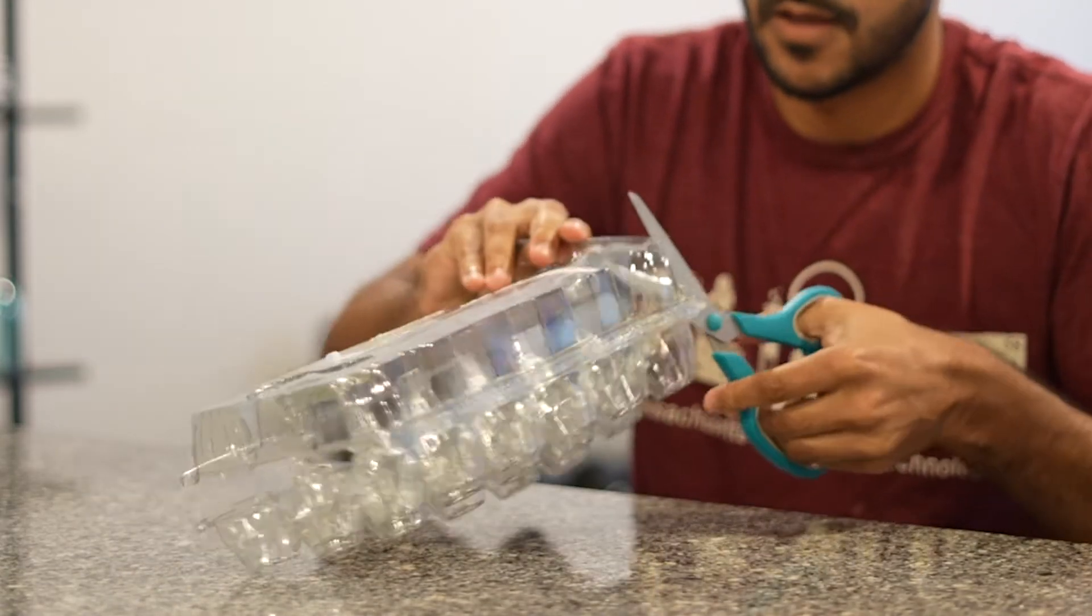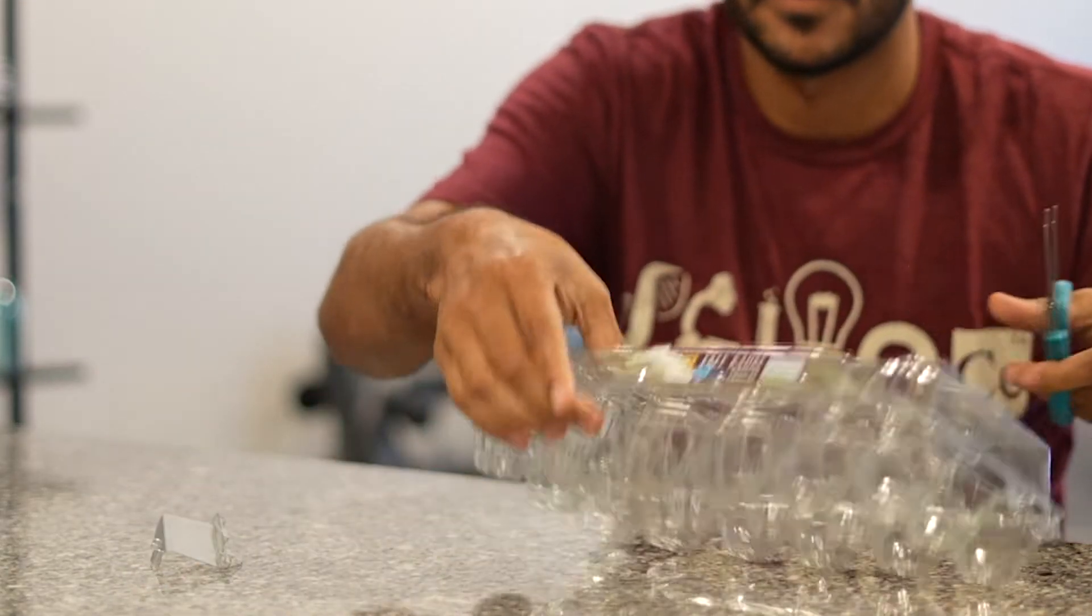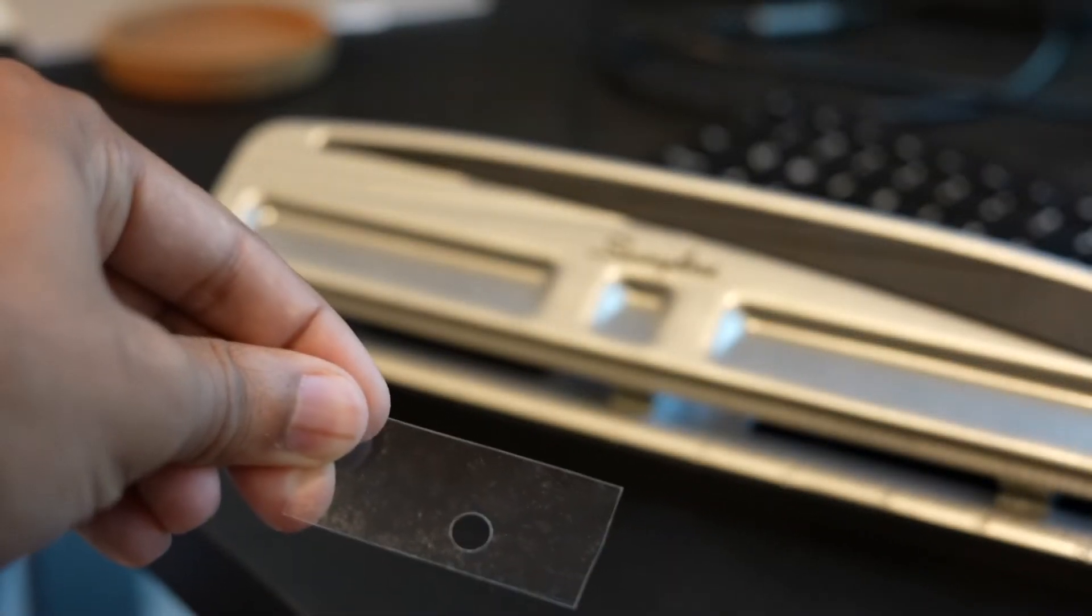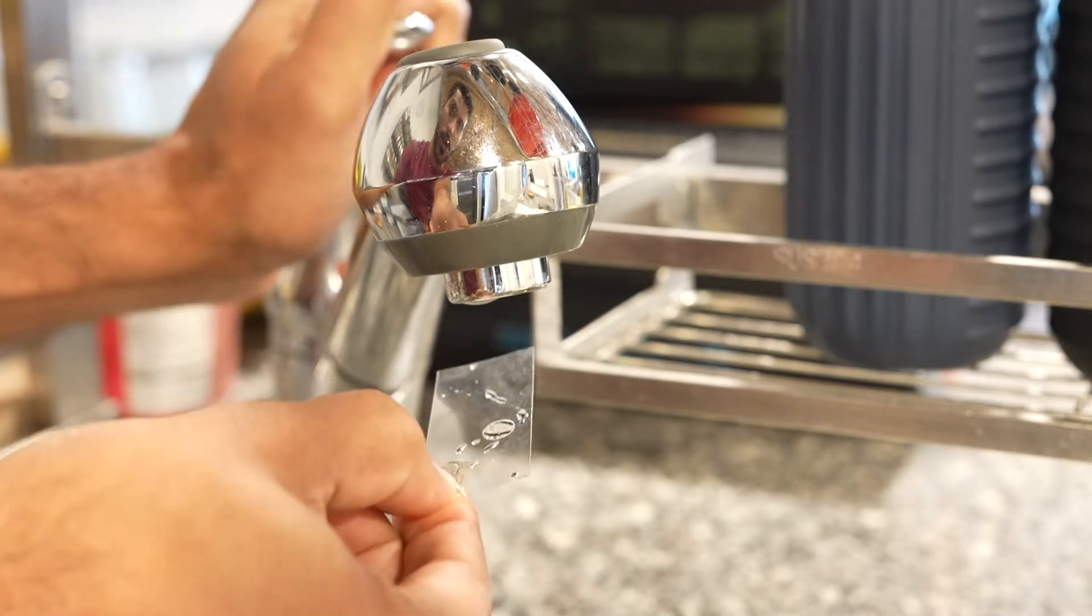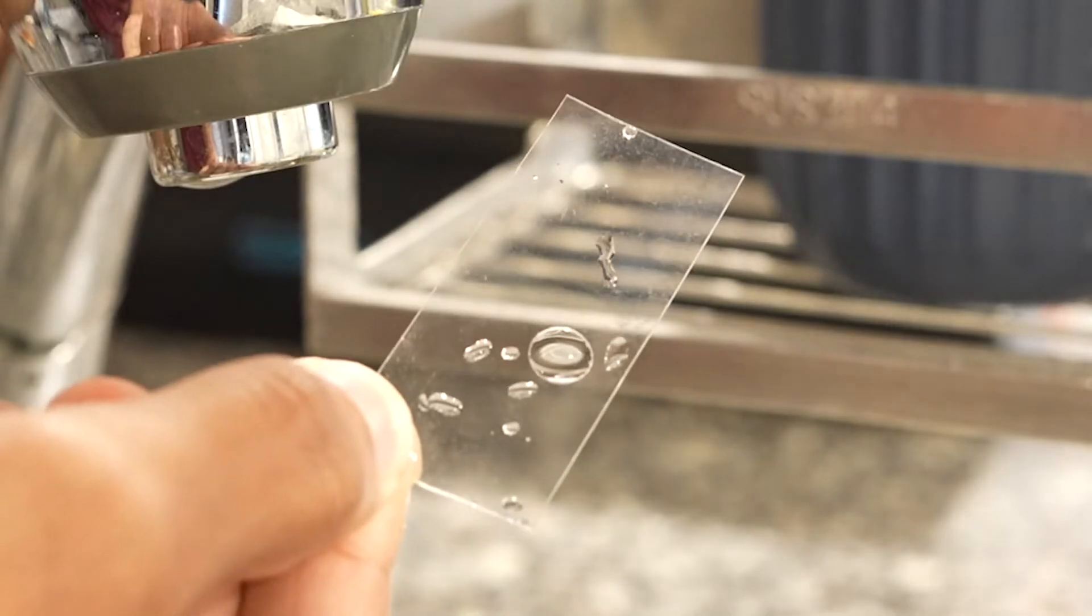You can build a microscope in two ways. The first is to punch a hole in a piece of plastic. Gently run water through it so that it forms a drop over the hole. This is your lens.